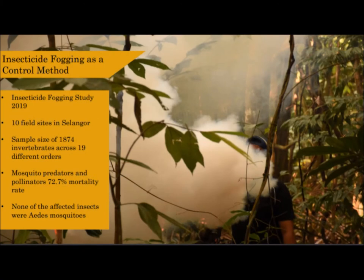Because diseases like dengue and malaria are capable of becoming epidemics, governments in affected countries have employed a wide range of methods to combat and control the spread of mosquito-borne diseases. One of the most common methods deployed in Malaysia is insecticidal fogging — the release of toxins in the form of aerosols or hot vapor into the environment to kill mosquitoes. But because these toxins are indiscriminate, we suspected that such practices were detrimental to biodiversity and may even exacerbate the problem.